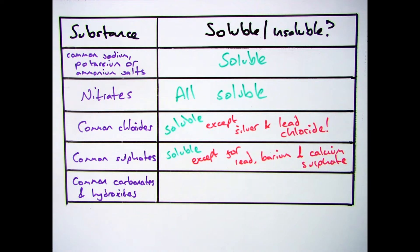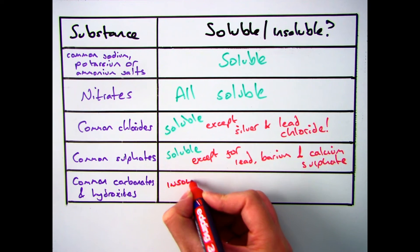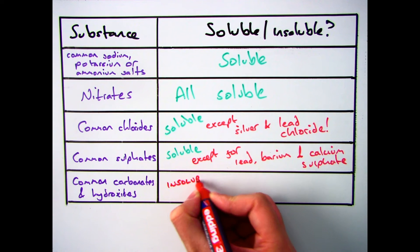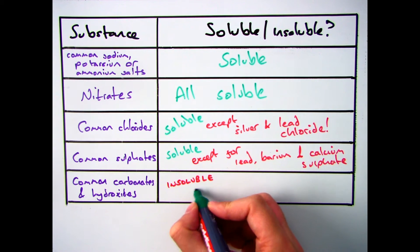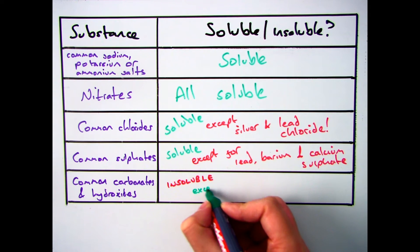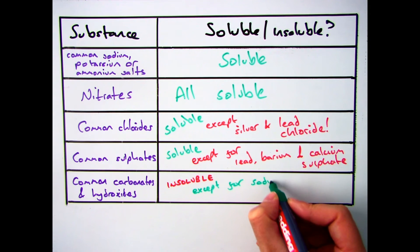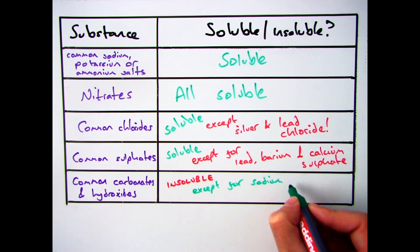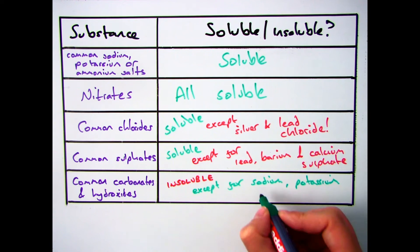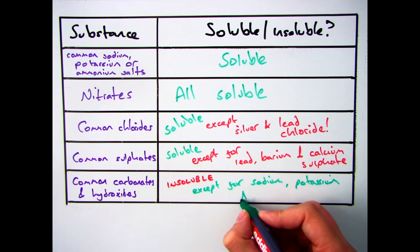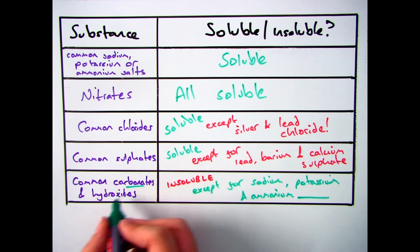In our final row we have carbonates and hydroxides, and the key thing here is that most carbonates and hydroxides are insoluble and therefore most of them will form a precipitate. There are three exceptions which are the ones at the top of the table: sodium, potassium and ammonium salts. Therefore sodium carbonate, sodium hydroxide, potassium carbonate, potassium hydroxide, and ammonium carbonate and ammonium hydroxide are all soluble and will dissolve.